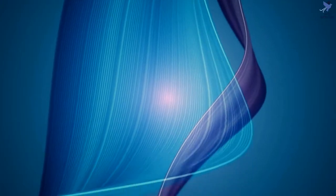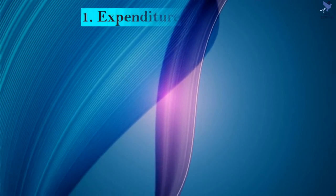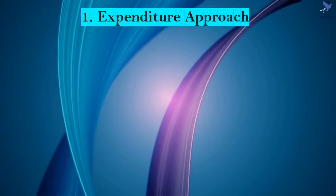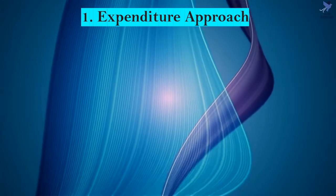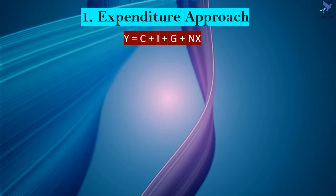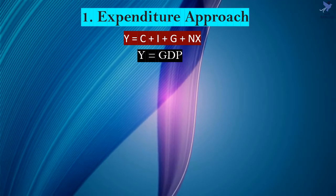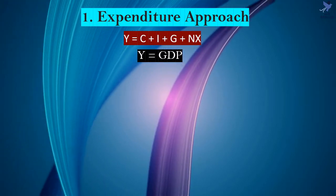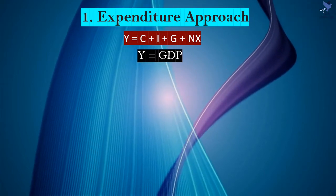Now, how do we measure gross domestic product? There are basically two ways to measure GDP. One is the expenditure approach and the other is the income approach. To determine GDP using the expenditure approach, we add up all the spending on final goods and services that have taken place throughout the year. The national income accountants use precise terms for the types of spending.